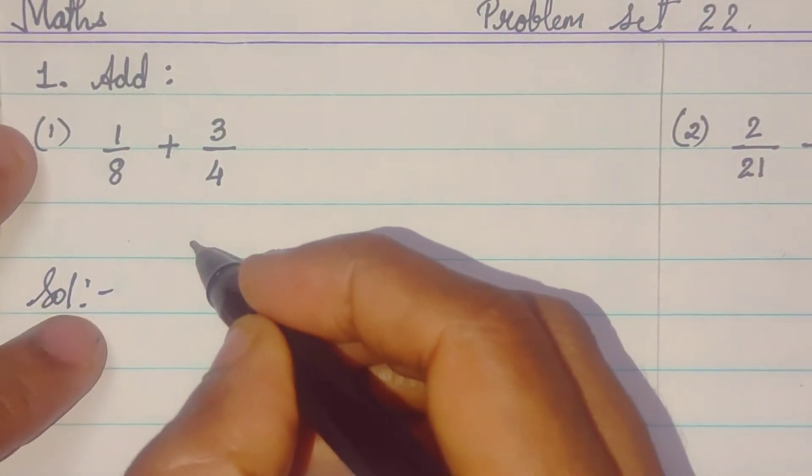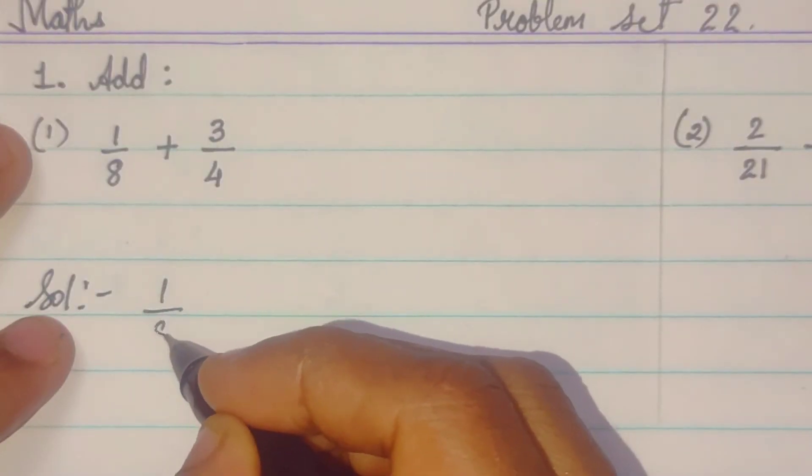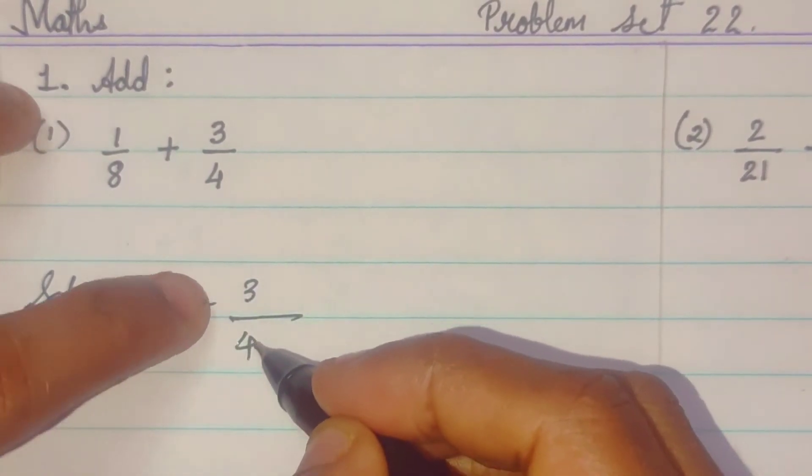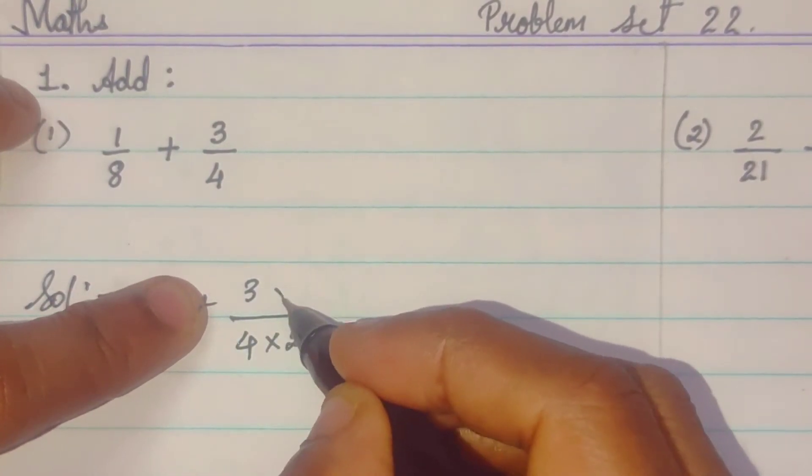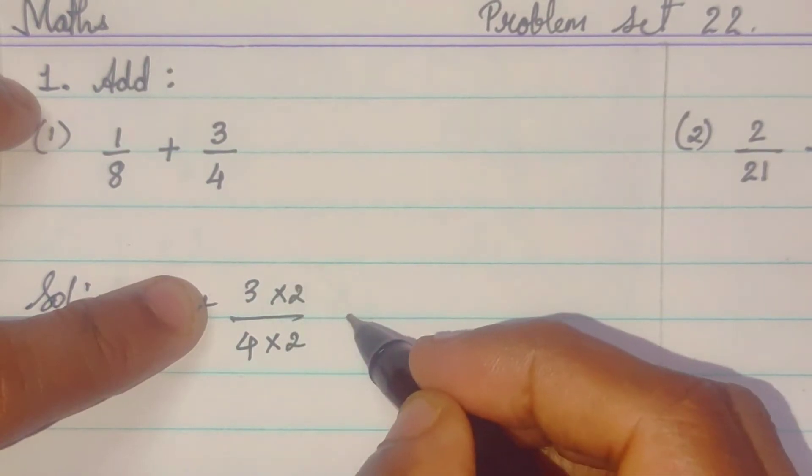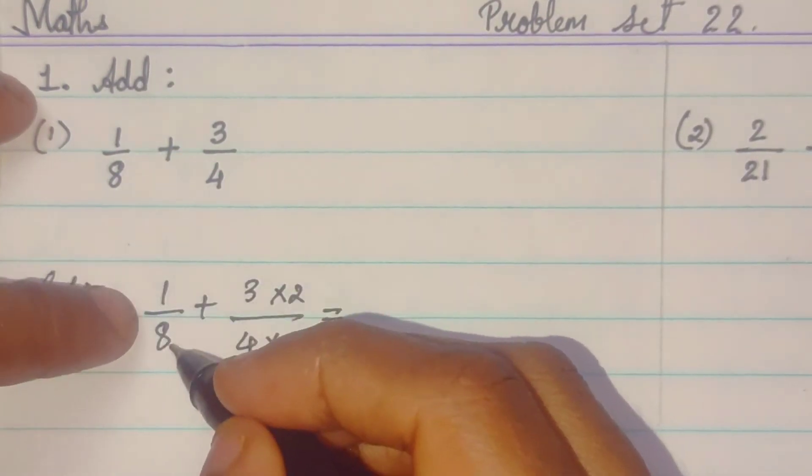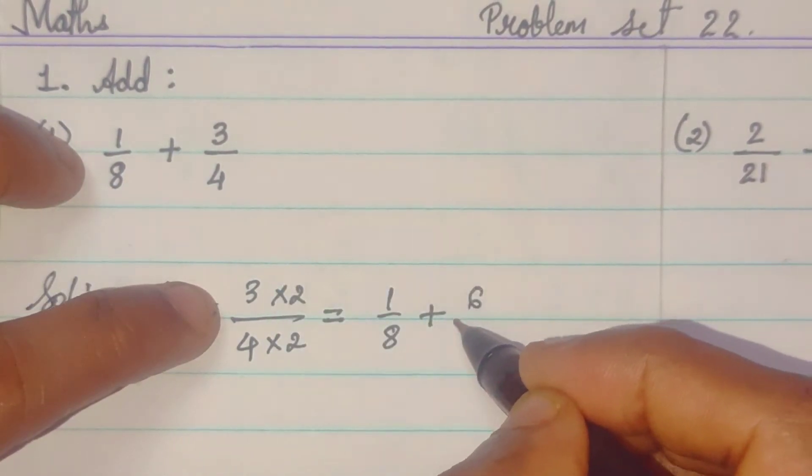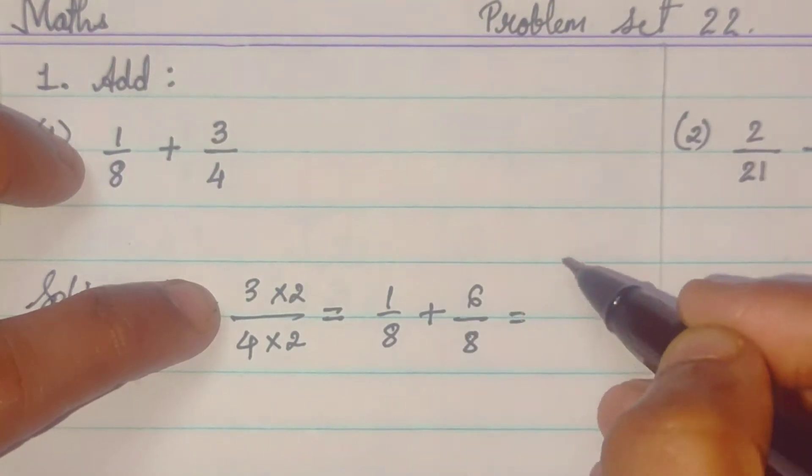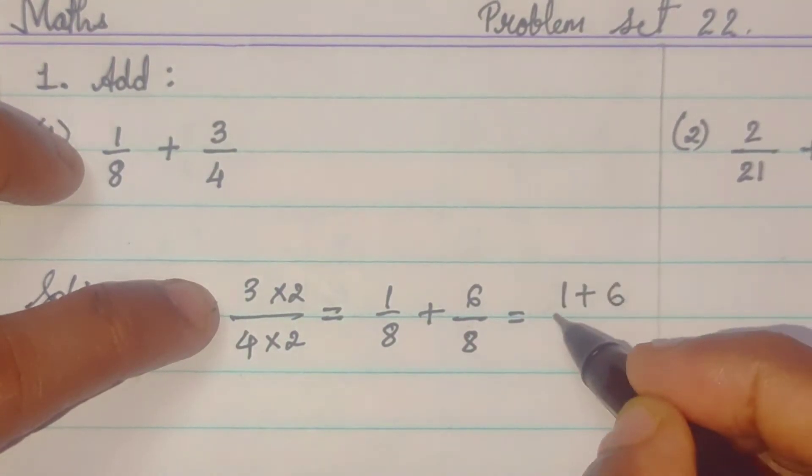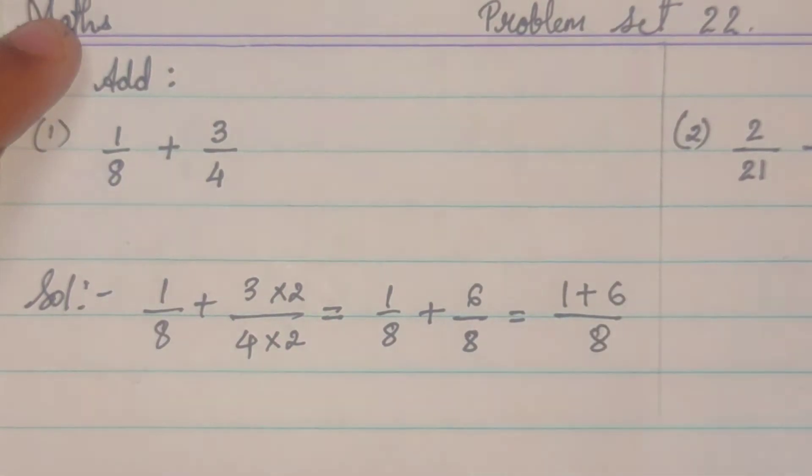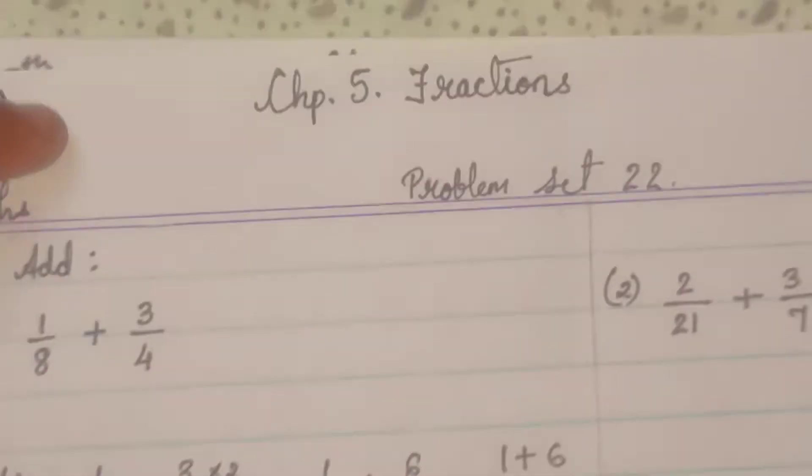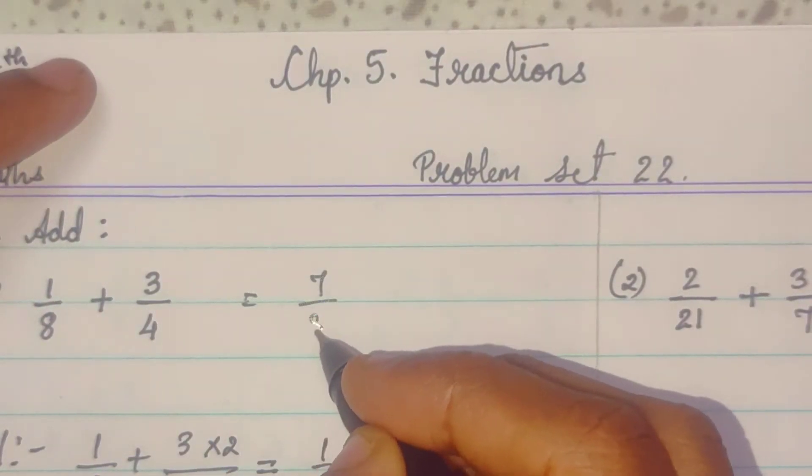So, for adding, what we have learned that denominator should be equal. So, here, 3 upon 4, this is the 4, this is the 2. So, we will multiply the next one. So, now, 1 upon 8, as it is, plus 3 to the 6, 4 to the 8. So, 1 plus 6 upon 8. Then, 1 plus 6 is how much? 7 upon 8. So, answer to this question is 7 upon 8.